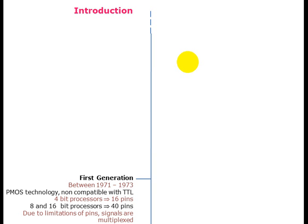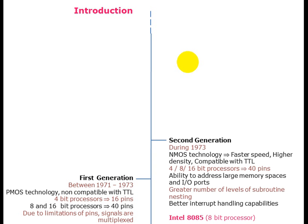The first generation, between 1971 to 1973, this microprocessor was created by PMOS technology, non-compatible with TTL, 4-bit microprocessor, 16-pin. And a 16-bit microprocessor uses 40 pins; due to a limitation of pins, signals are multiplexed.